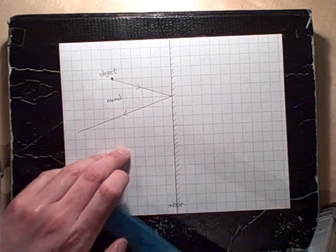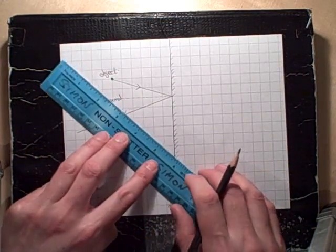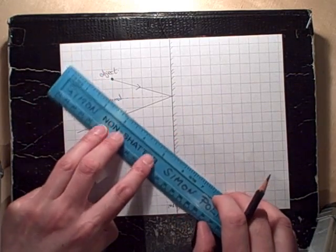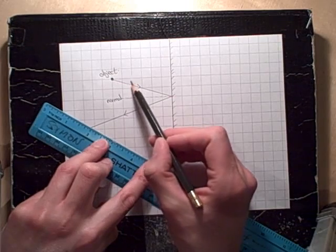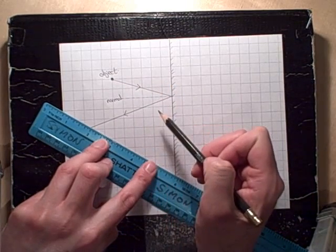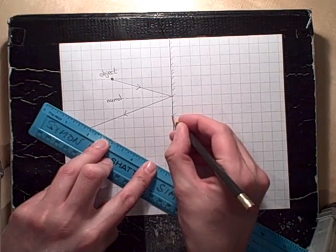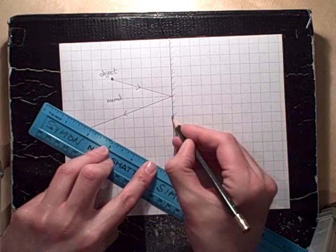Then I need to do exactly the same thing again, but choosing a ray that reflects off a different point. So this time, I'm going to have my one, two, three, four, five, six squares across, but I'm going to go one, two, three, four squares down to hit the mirror at this point here.